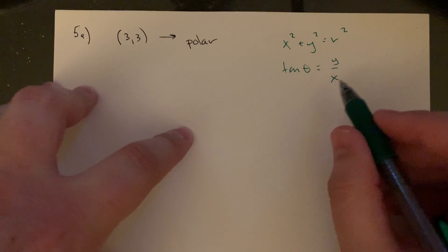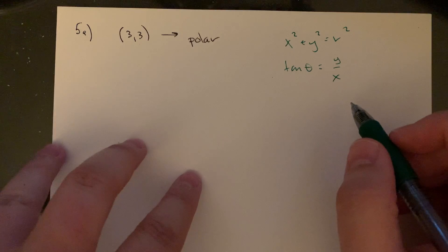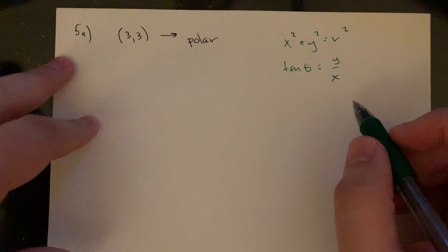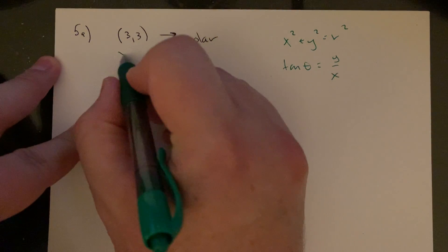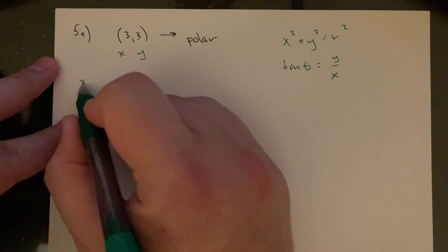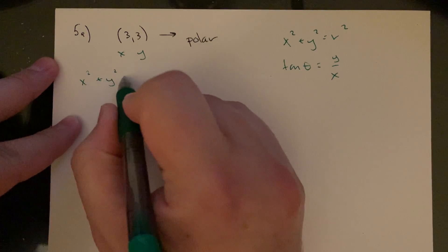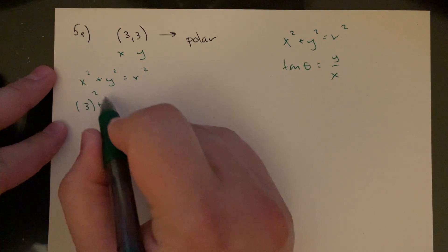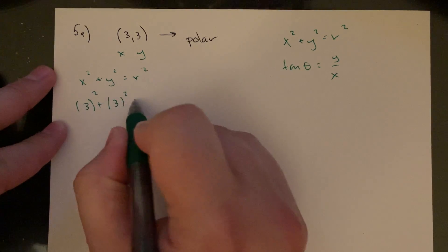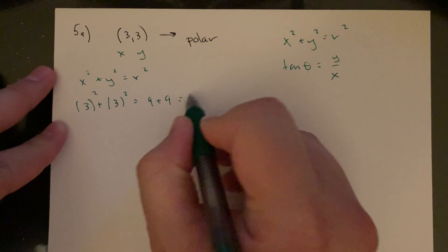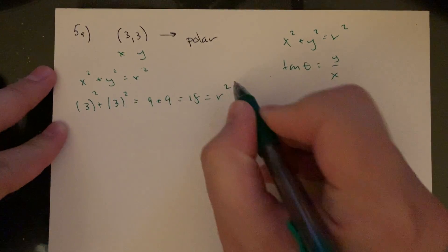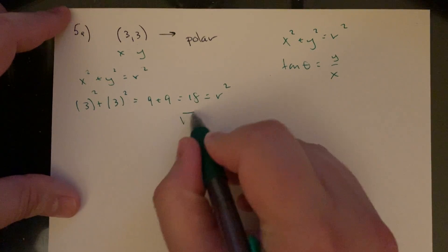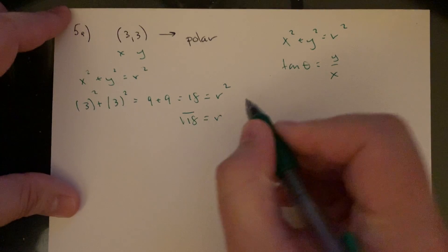And we'll also use tangent of theta is y over x. So we'll use that in an inverse kind of way, and then of course also paying attention to the quadrant. So let's go. So this is x and this is y. That means x squared plus y squared is radius squared. That's going to be 3 squared plus 3 squared, which is 9 plus 9 is 18 is radius squared.